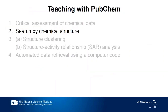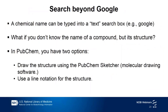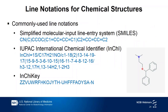The second topic is about how to search PubChem by chemical structure. You can type a chemical name into the Google search box, but what would you do if you don't know the name of the compound but know its structure? In PubChem, you have two options. First, you can draw the structure using molecular drawing software called PubChemSketcher, or use a line notation for the structure. Several line notations for chemical structures have been developed, but the most commonly used ones are SMILES, InChI, and InChIKeys — and all of these are supported in PubChem.